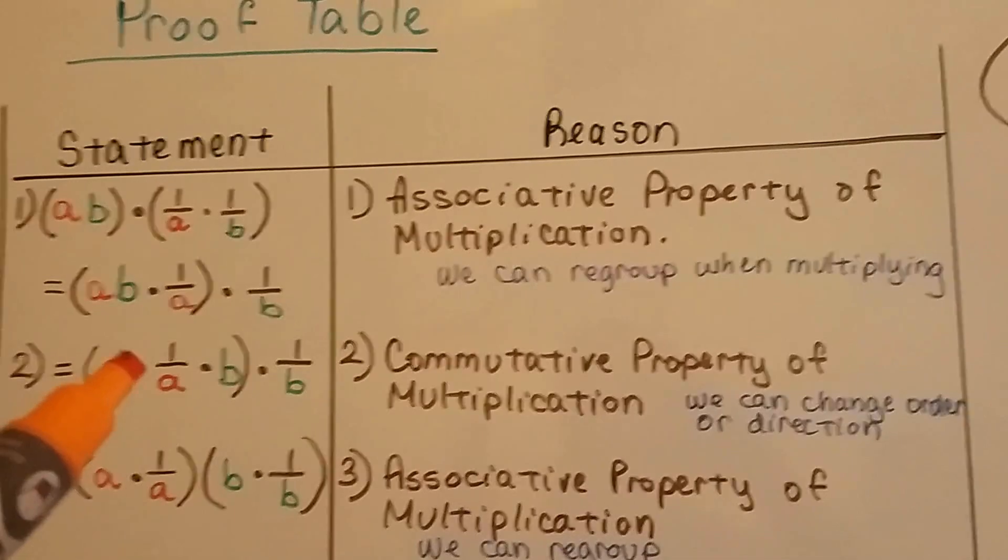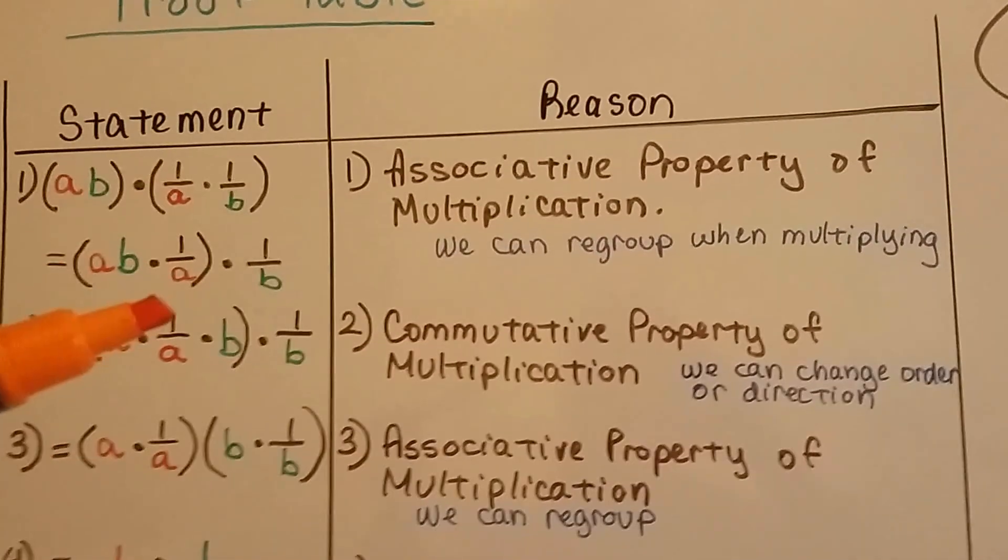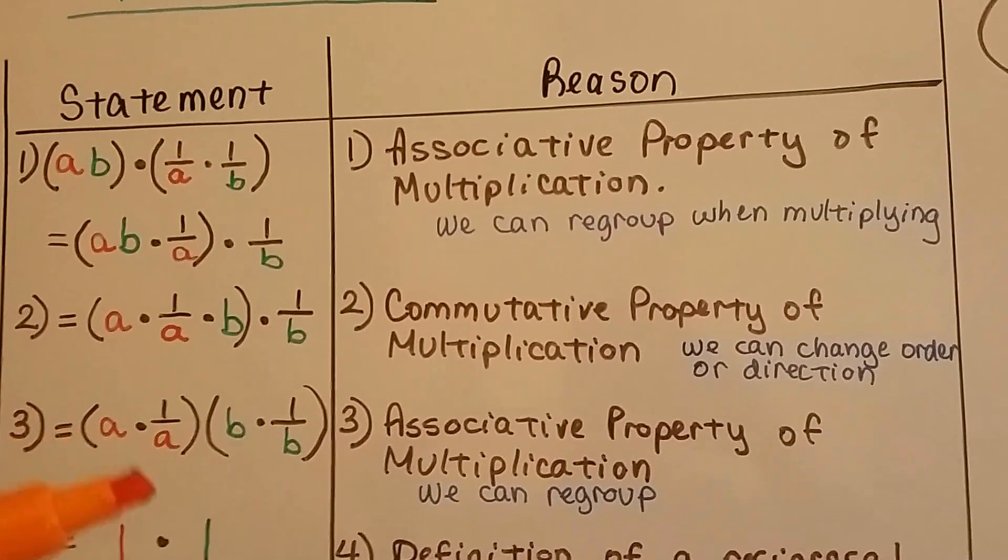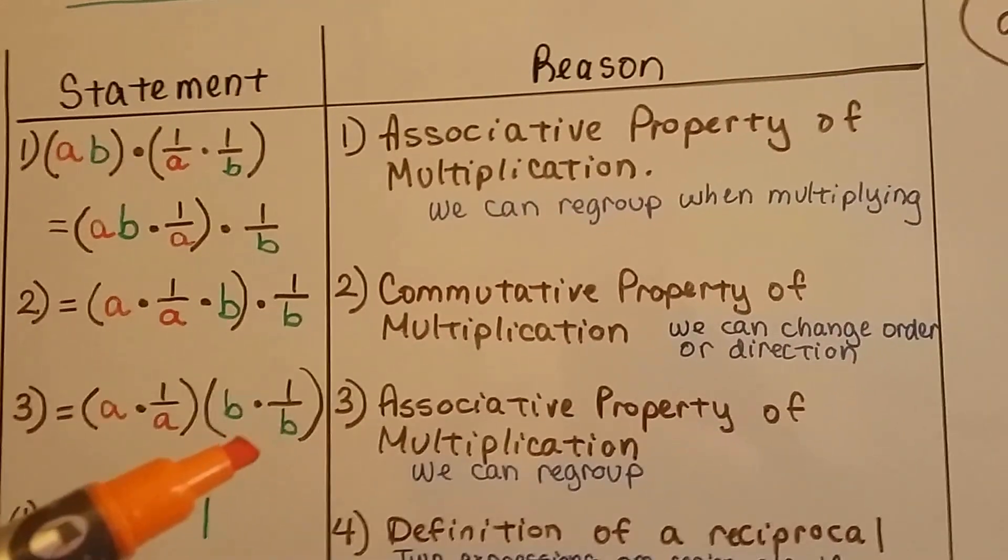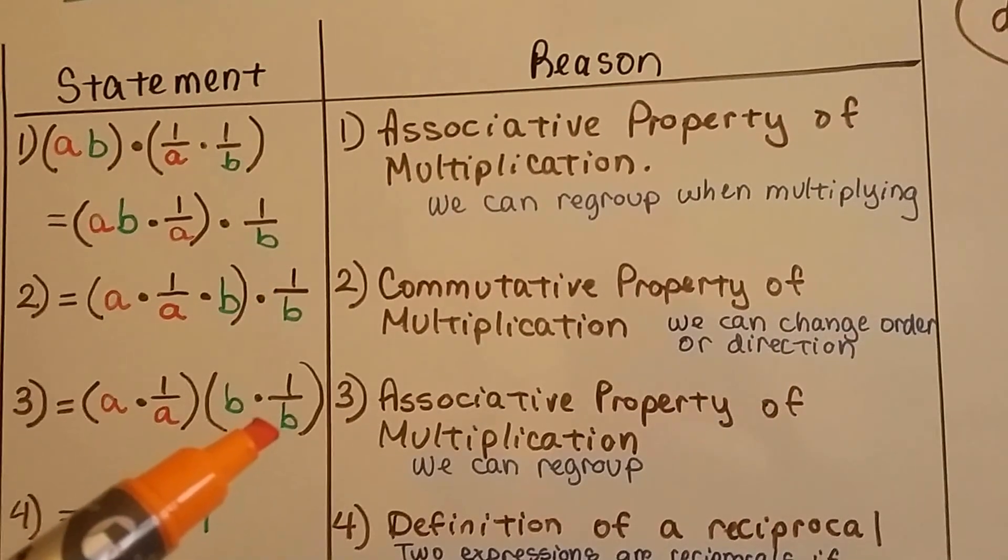Now that we've got the a next to the 1 over a—this is technically a over 1, isn't it? So that's going to make a over a. And this one, because of the associative property, we can group this b with this 1 over b like that.